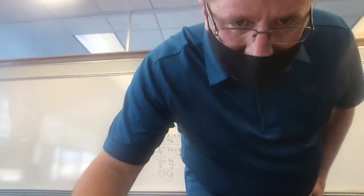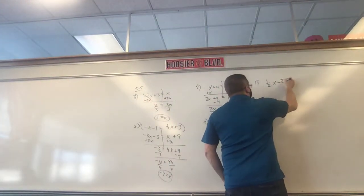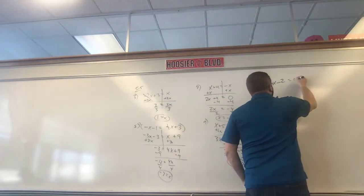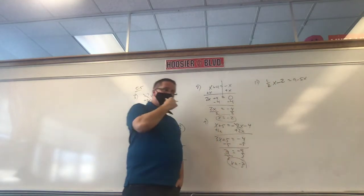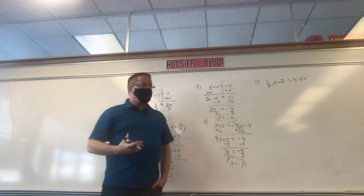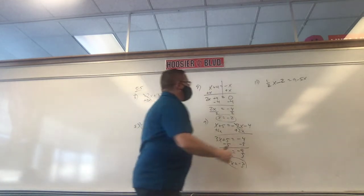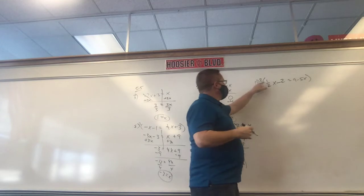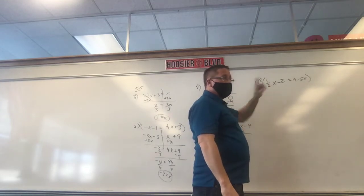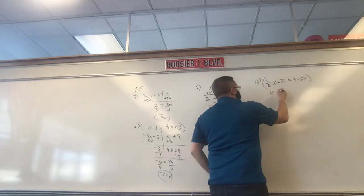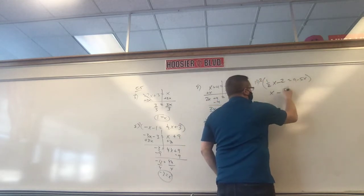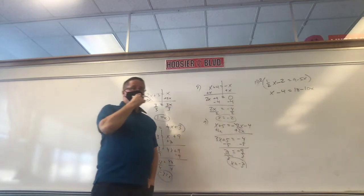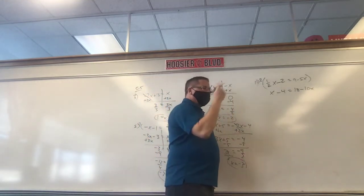Number 11 continued. Times by 2: 2 times 1/2 x is 2/2, which is 1x. Minus 4 equals 18 minus 10x. The benefit? No fractions. That's such a nice thing to do. You guys hate fractions, so do I. One step and they're gone. Now add 10x to each side. 1x and 10x is 11x minus 4 equals 18. Add 4 on each side. 11x equals 22.